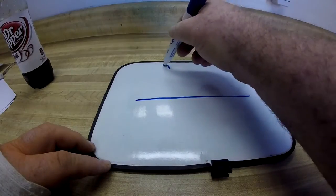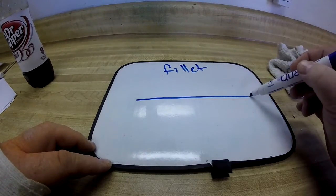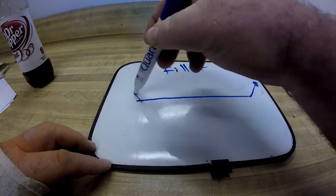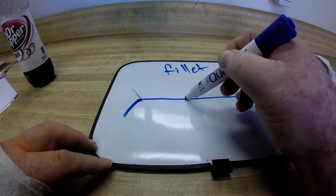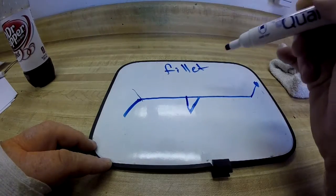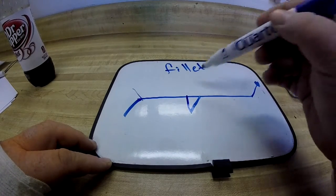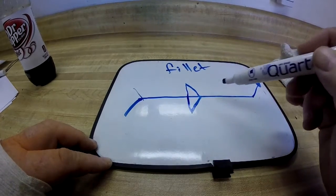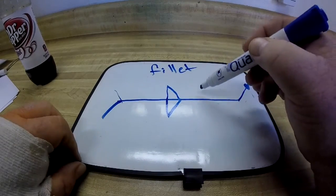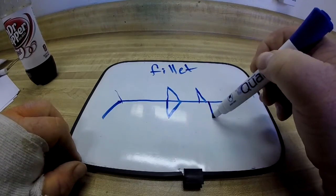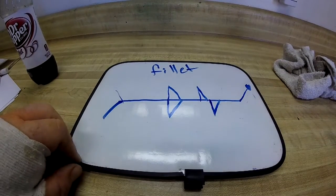Next up we will talk about the fillet weld. Again, this is our reference line, our arrow, and our tail. And the fillet weld is a perpendicular line with an angle. It can be that simple. That's it on the arrow side. You can have it on the other side, and this will be telling you to weld both sides. You can also have them like this, which would be staggered fillet welds, and we'll get into that also.